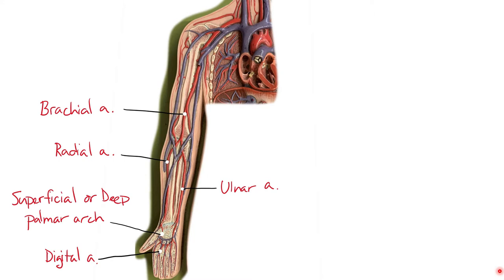Blood flow from the hand back through the deep veins is very similar to the arterial flow — almost identical in nomenclature. Digital veins run alongside the digital arteries, and blood flows into the superficial and deep palmar venous arches, which then drain into the radial veins and the ulnar veins — the venae comitantes, those paired veins that run alongside their companion arteries. This model does not include those deep veins, but after crossing the elbow, the radial and ulnar veins merge to form the brachial veins, which run parallel to the brachial artery.